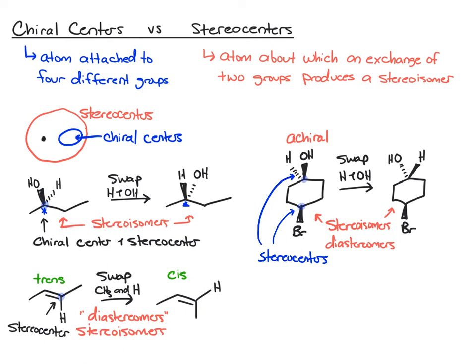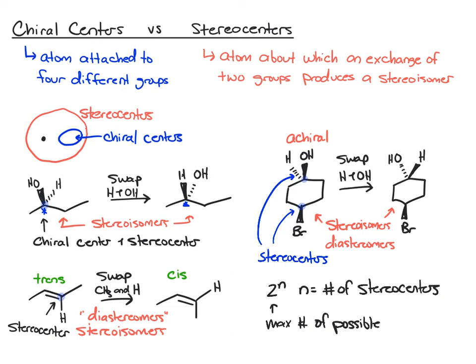So there is a subtle but very important difference between chiral centers and stereocenters. We can now expand our 2-to-the-n rule: let n equal the number of stereocenters, and that gives us the maximum number of possible stereoisomers. By using the stereocenter term, that opens up the definition to capture both stereocenters and chiral centers.